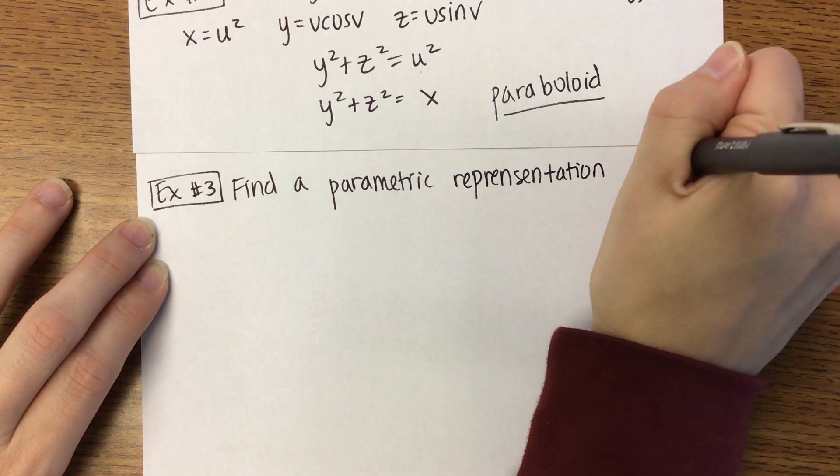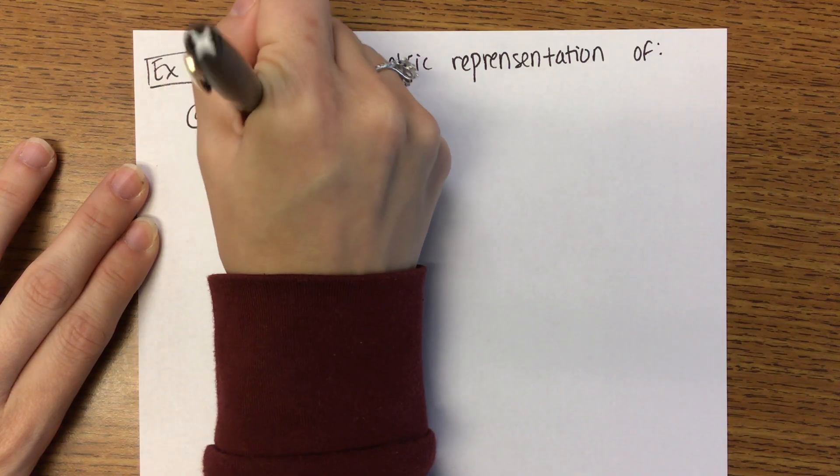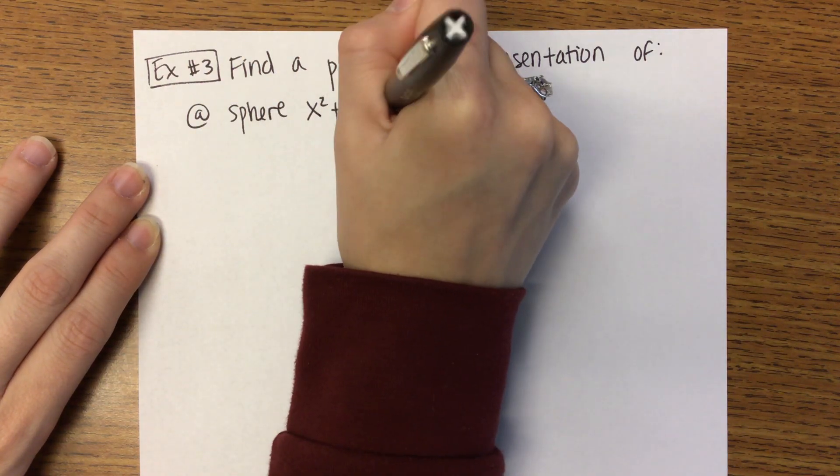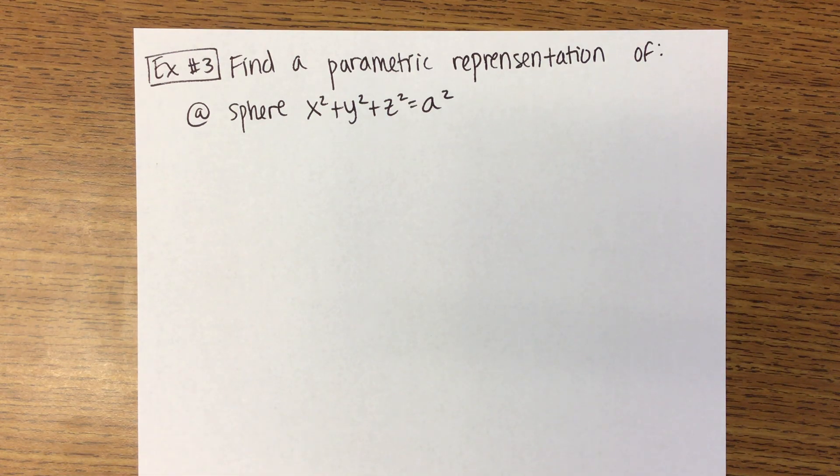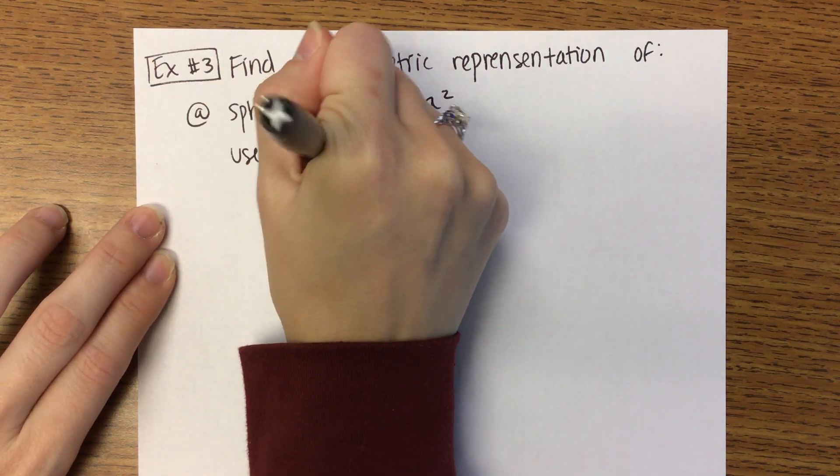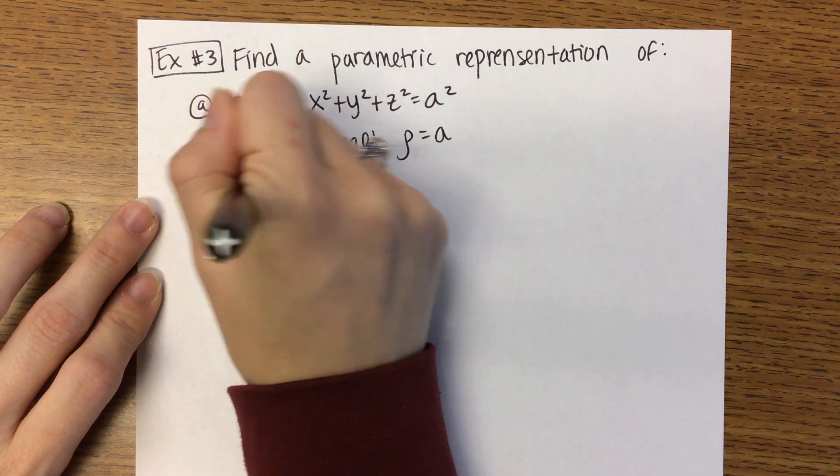We're going to find a parametric representation of three different ones. First one is the sphere: X squared plus Y squared plus Z squared equals A squared. Ideas? We have parametrically represented spheres before. I'm just looking for one word. Yes, we're going to use spherical. In this case, rho is going to be equal to A.